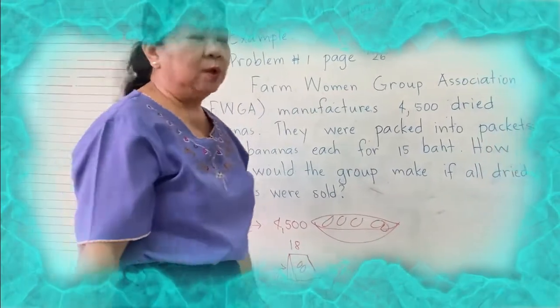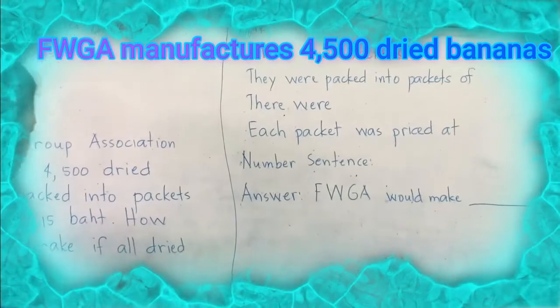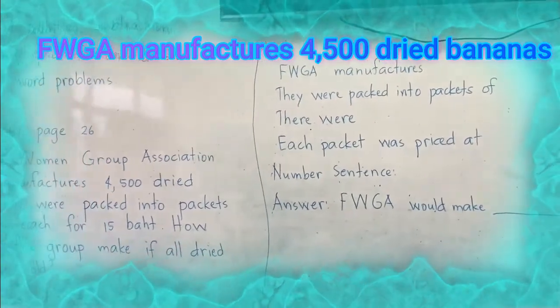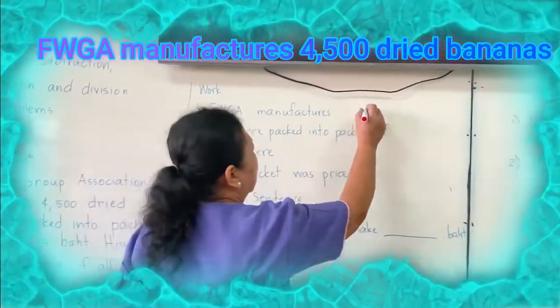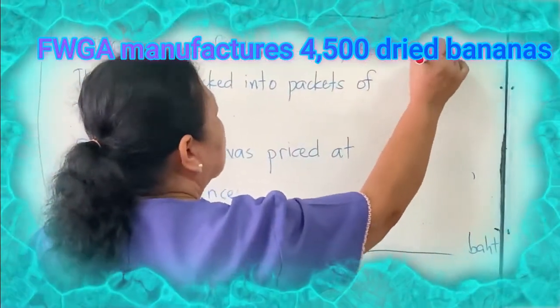So this is the working. FWGA manufactures 4,500 bananas. So right here, 4,500 bananas.